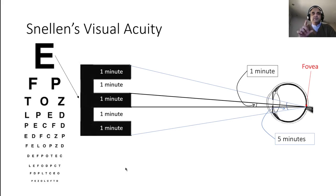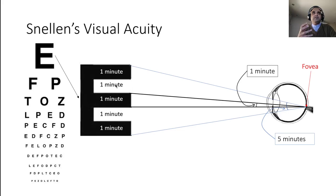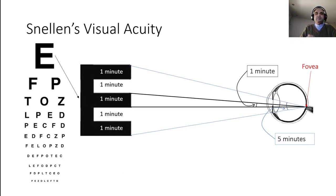Each part of the letter — black, white, black, white, black — is one minute away from the next, stimulating photoreceptors such that all five are recognized as discrete objects. The brain composes an image it recognizes as an 'E' because you have learned what that shape is called.